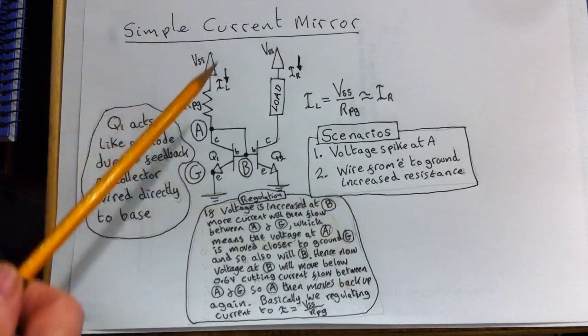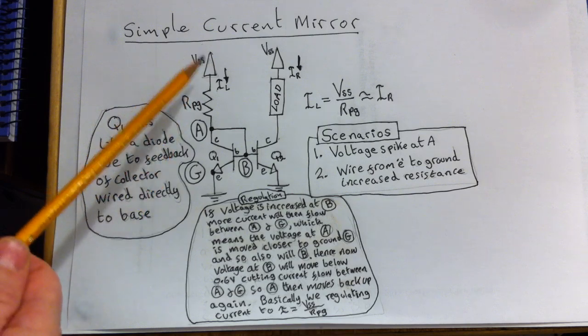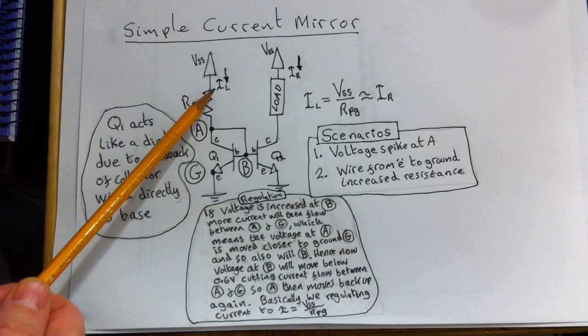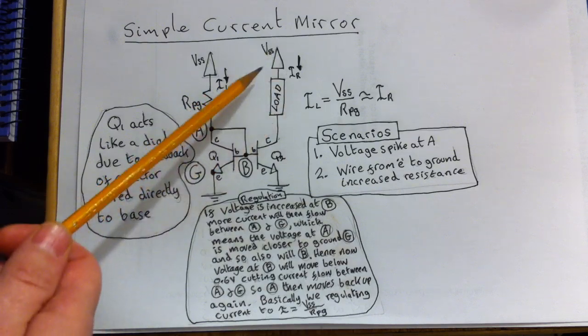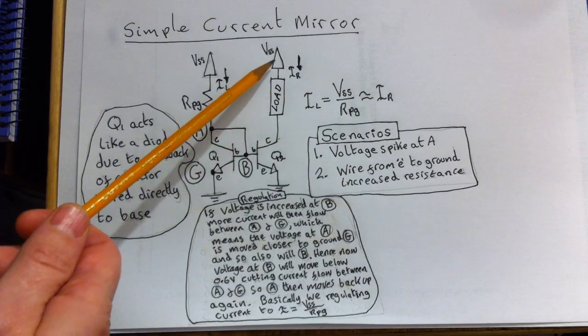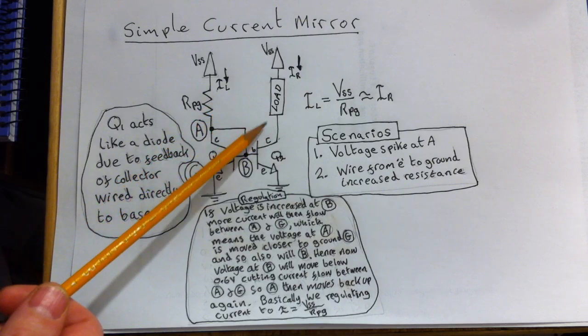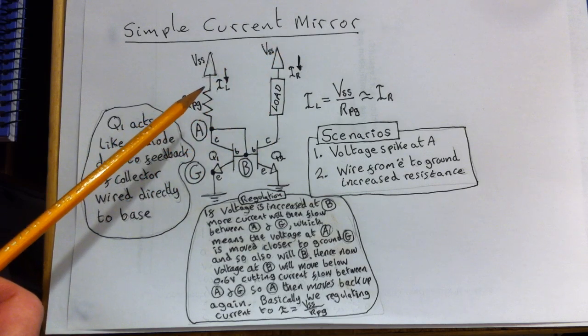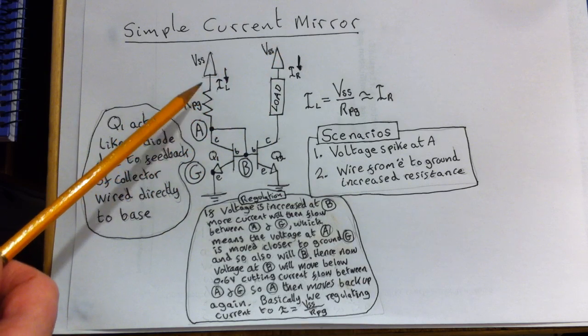Now, the purpose of the current mirror is to take this current IL and replicate it over here on the load IR. We want the current that passes through this load to be fixed at all times. So this is what the current mirror is able to do for us.